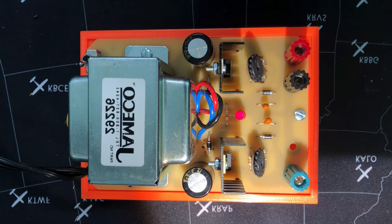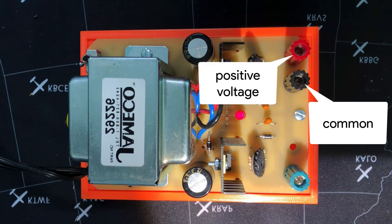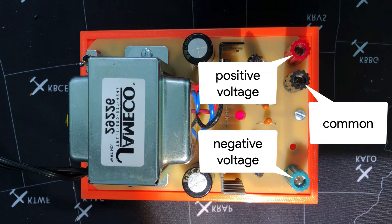The binding posts connect to different output voltages. The black binding post is a common lead, the red binding post is a positive voltage, and the green binding post is a negative voltage.